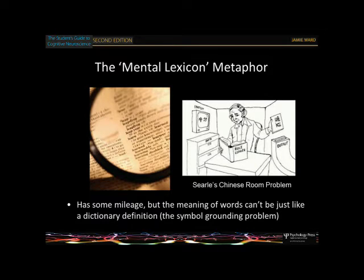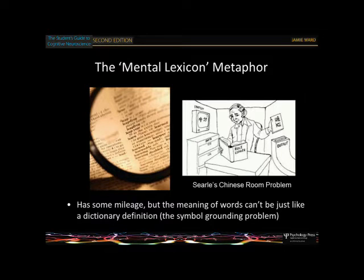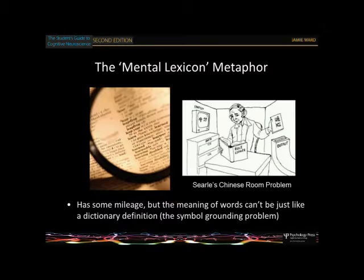We'll talk about semantic memory more in the memory lecture as well. It's important to distinguish it from problems in perception — recall HGA, the guy whose concepts of dogs and things were all blended together into 'animal'. He could talk fine and describe the difference between a cat and a dog, whereas a patient with the semantic problem would just say 'it's an animal.' It's to do with the actual understanding of concepts rather than the visual processing of objects itself.